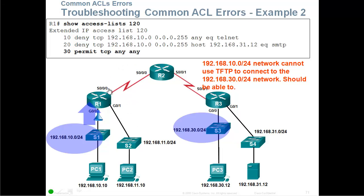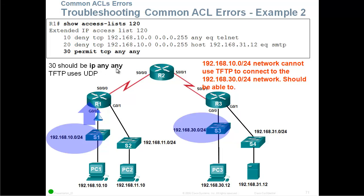The problem is that TFTP uses UDP, not TCP. So the last statement — sequence 30 — should have been 'permit IP any any', because TFTP uses UDP and not TCP.